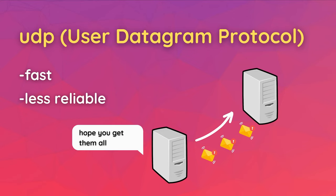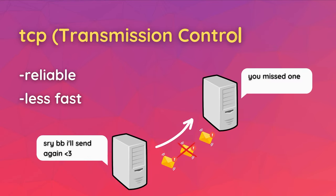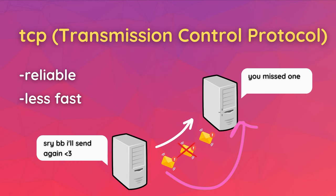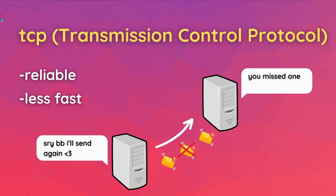The two biggest protocols you might have heard of are UDP and TCP. UDP — User Datagram Protocol — is much faster but less reliable because it just shoots out all the messages without any confirmation that the receiver got them. TCP — Transmission Control Protocol — is more reliable because it verifies that all packets have been received; however, because it has to verify each package, it is much slower. Essentially, if a packet is lost, TCP will retransmit it — it's like a relationship where they communicate if something's been lost.